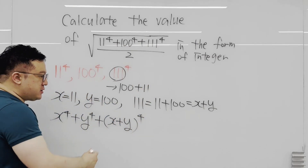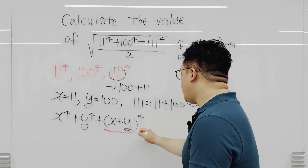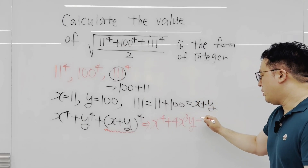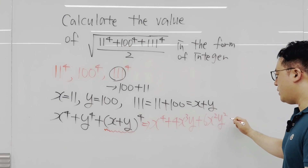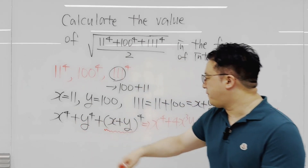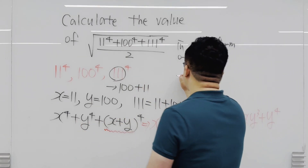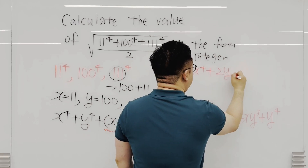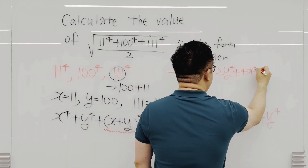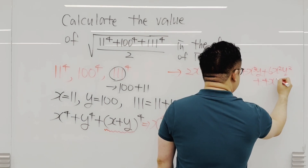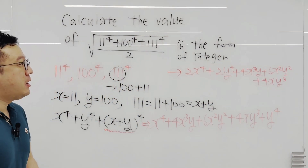If we distribute (x+y)⁴, this expands to x⁴ plus 4x³y plus 6x²y² plus 4xy³ plus y⁴. Adding the original x⁴ and y⁴ terms, the full numerator becomes 2x⁴ plus 4x³y plus 6x²y² plus 4xy³ plus 2y⁴.